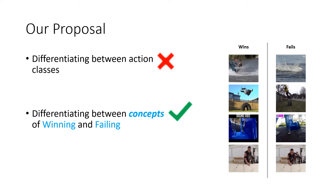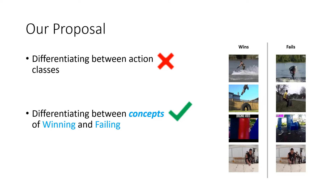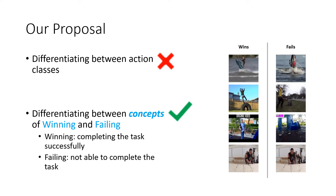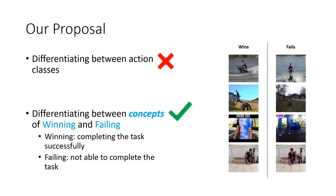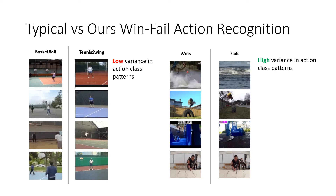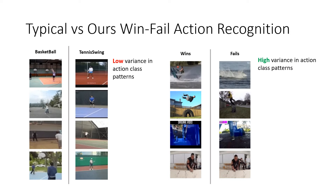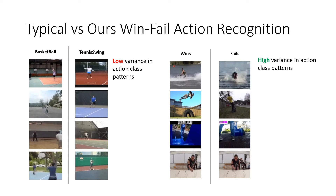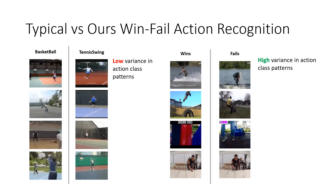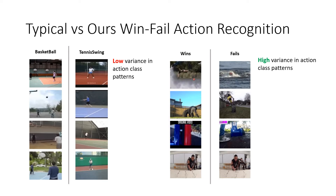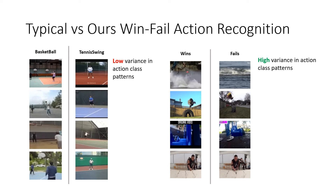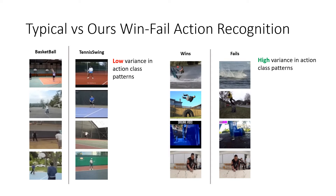Towards that end, we propose to repurpose the task of action recognition from differentiating among action classes to differentiating between concepts of winning and failing — where winning can be defined as completing the task successfully while failing can be defined as not being able to complete the task. As you can see, action class signatures look very similar in typical action recognition, but very different in our WinFail action recognition dataset.